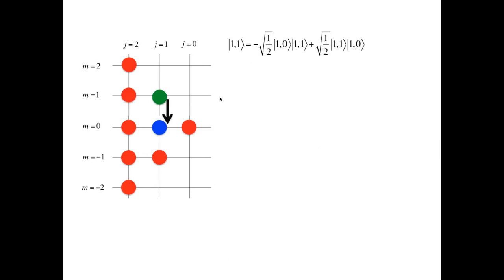We are able to write the coupled basis |1,1⟩ as a linear combination of states |J1,M1⟩, |J2,M2⟩, with M1 plus M2, again, being equal to 1. This state is represented on the grid as a green dot.